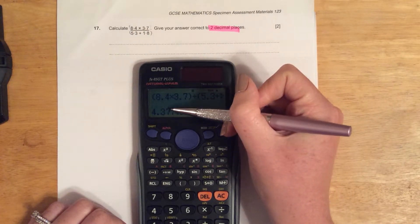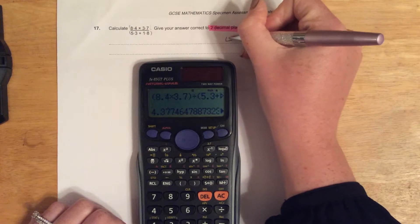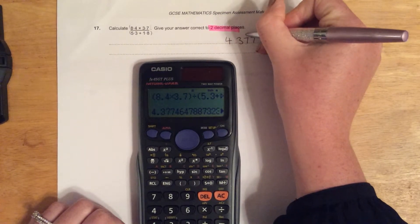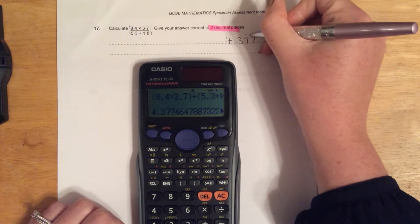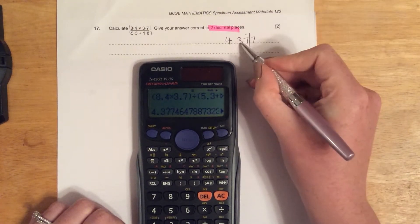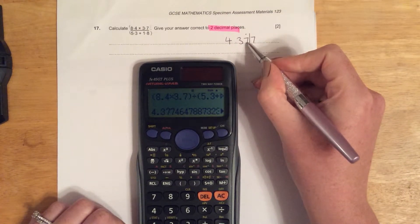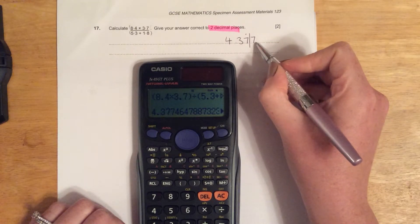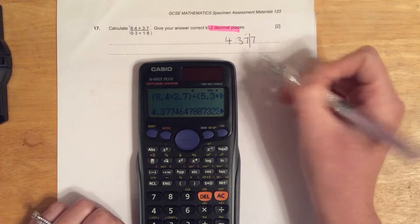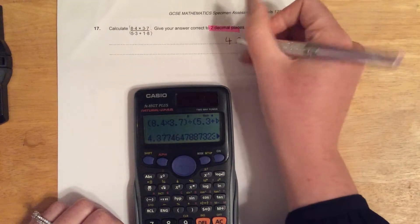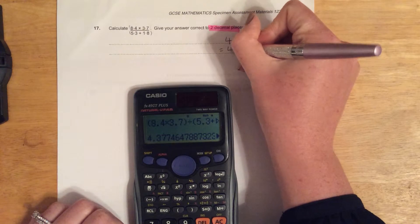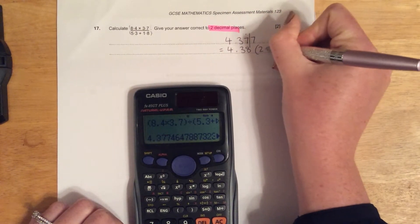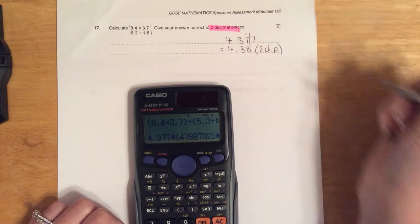I can then round to two decimal places. That means after 4.377, I need to put a line after the second number after the decimal place, and then I round as usual. The number after is above 5, which means this number must round up, so that will be 4.38 to two decimal places.